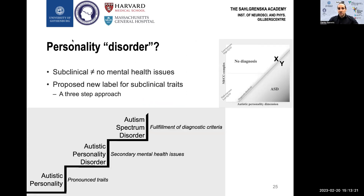One of the implications of conceptualizing a normally distributed personality domain is that it implies ASD is not binary, although this is not news. But in extension, subclinical traits are only slightly less problematic than those in the clinical range. For example, in the plot on the right, there is no fundamental difference between individuals X and Y. It would be hard to differentiate them clinically since they are both close to the diagnostic threshold, and one can expect low agreement for blinded neuropsychiatric assessments of X and Y compared to individuals far in the bottom right corner of the plot.